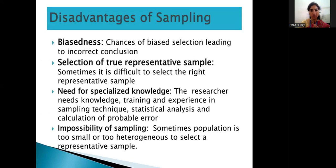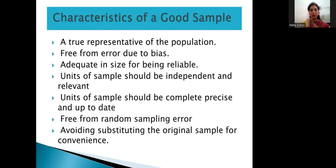The disadvantages of sampling: first, bias — chances of biased selection leading to incorrect conclusions are very possible. Second, selection of a true representative sample — it is sometimes difficult to select the right representative sample. Third, need for specialized knowledge — the researcher needs knowledge, training, and experience in sampling techniques, statistical analysis, and calculation of probable error. Fourth, impossibility of sampling — sometimes the population is too small or too heterogeneous to select a representative sample.